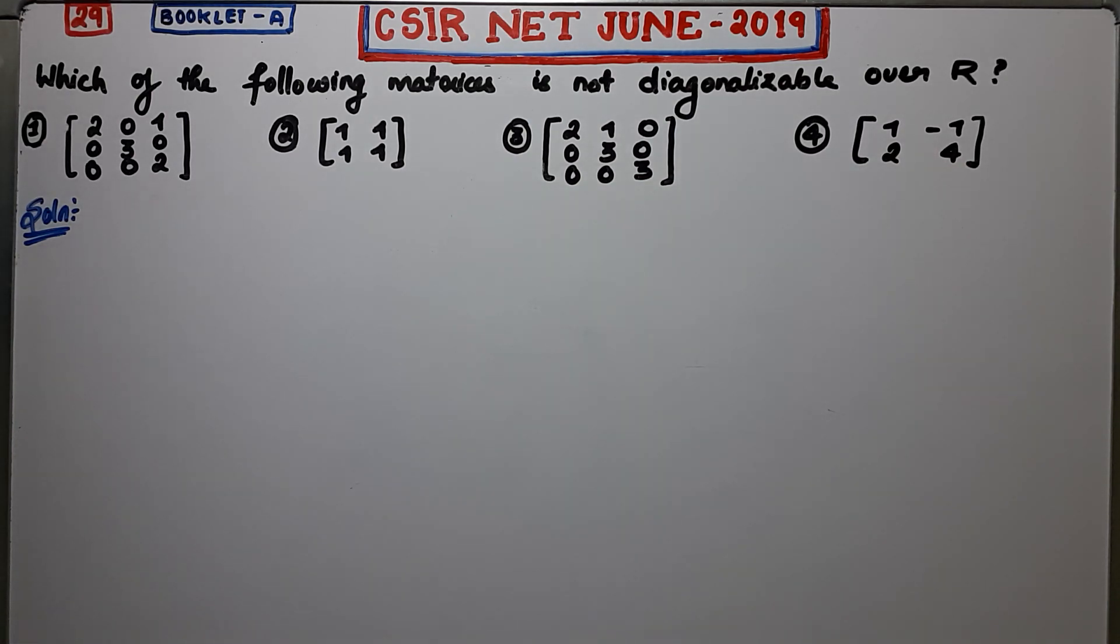What I am going to do is show you three important notes regarding the diagonalizability of a given matrix over R, or you can say over C. Using those three notes you can conclude which one of these is false.